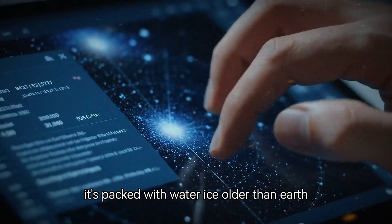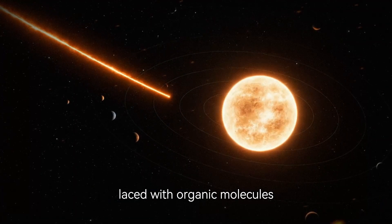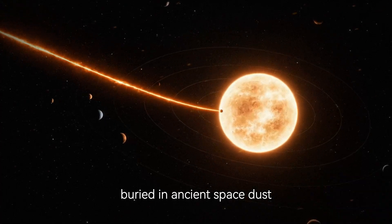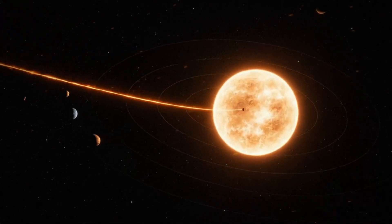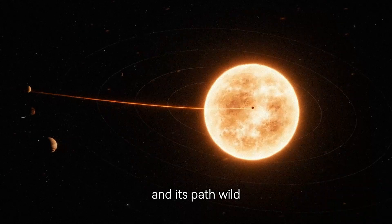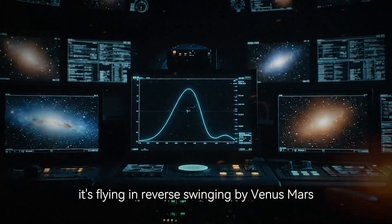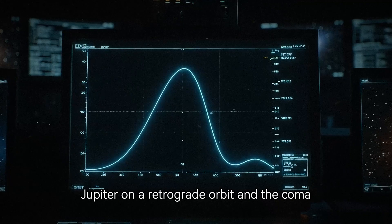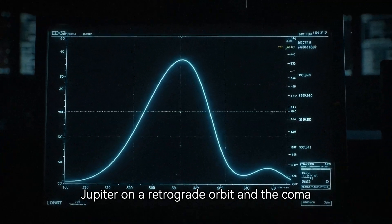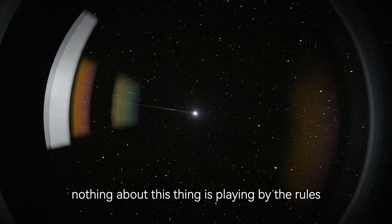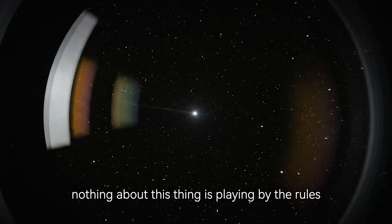It's packed with water ice older than Earth, laced with organic molecules buried in ancient space dust. And its path? Wild. It's flying in reverse, swinging by Venus, Mars, Jupiter on a retrograde orbit. And the coma? It doesn't even act like a normal comet. Nothing about this thing is playing by the rules.